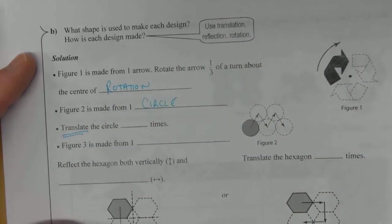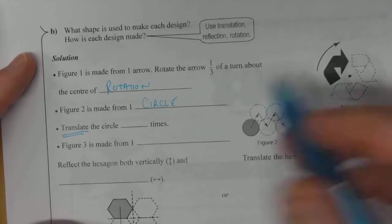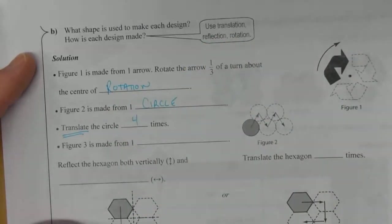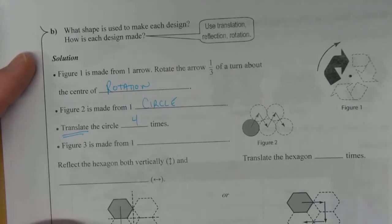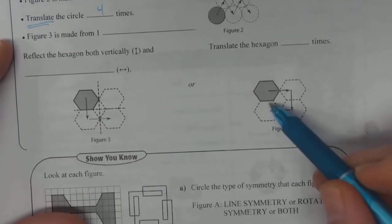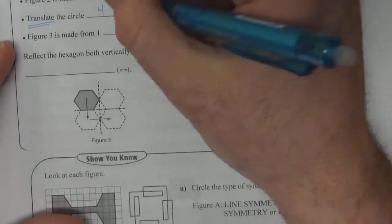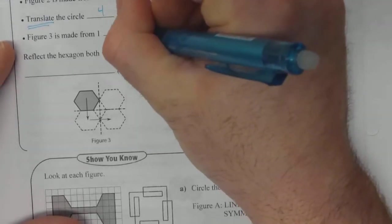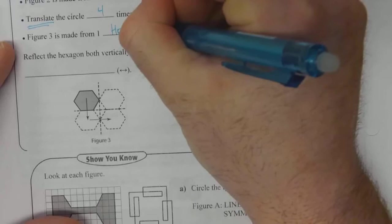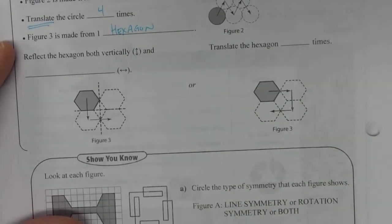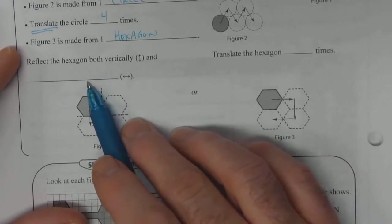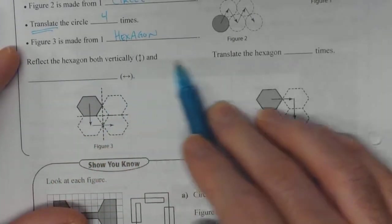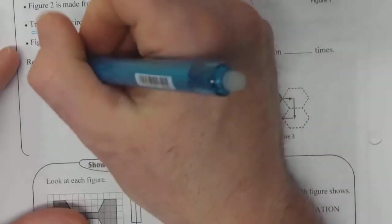Figure 3: we've got a hexagon, so it's originally from one hexagon. And we've got two reflections going on, so we can reflect both vertically and horizontally.